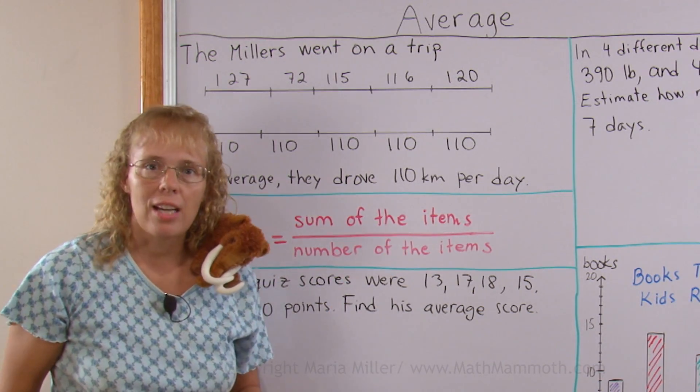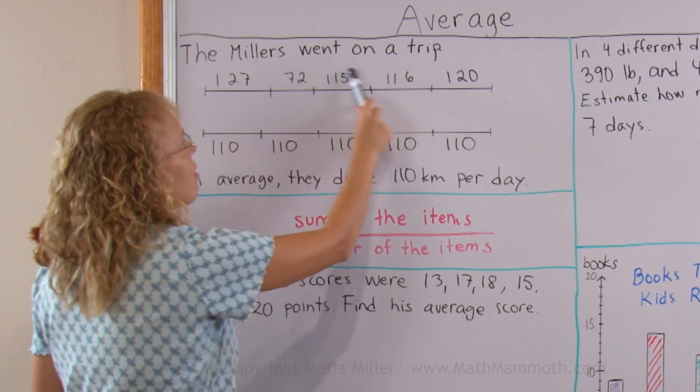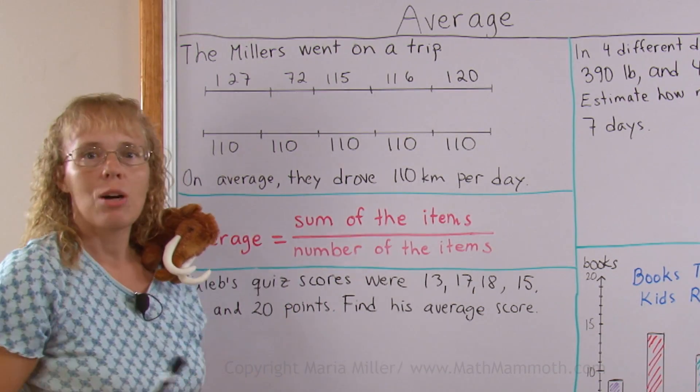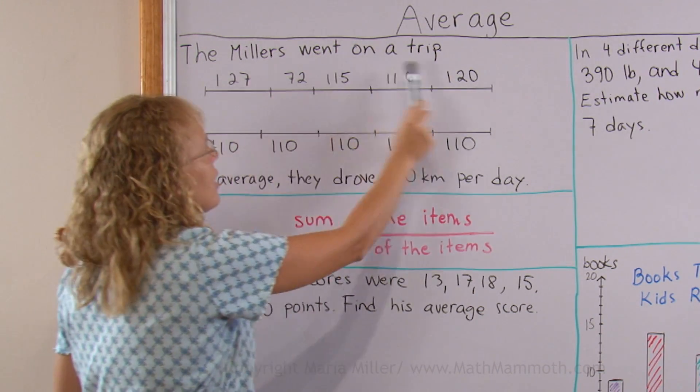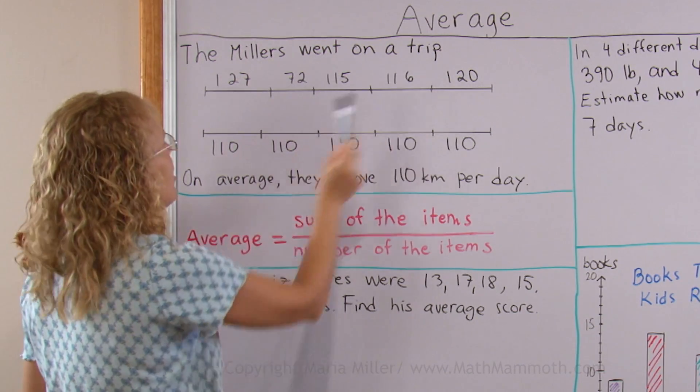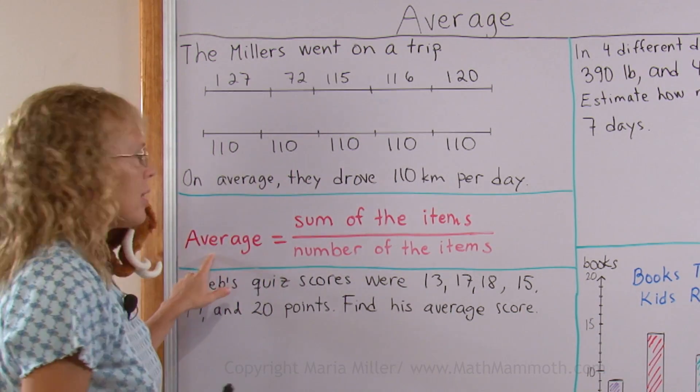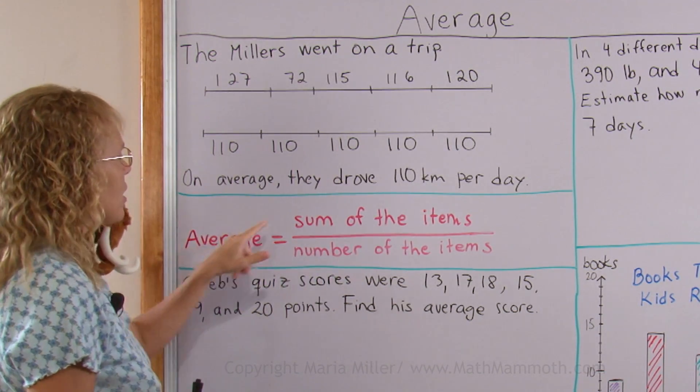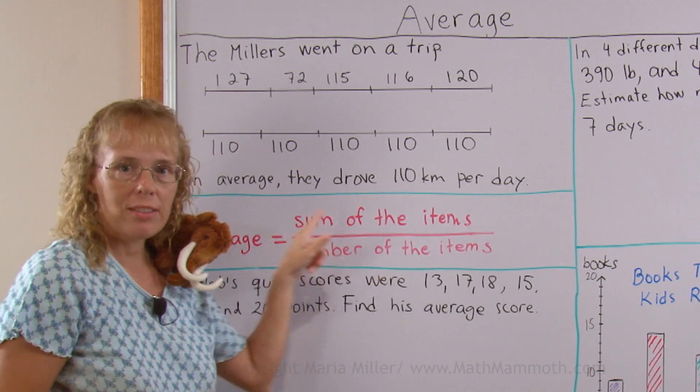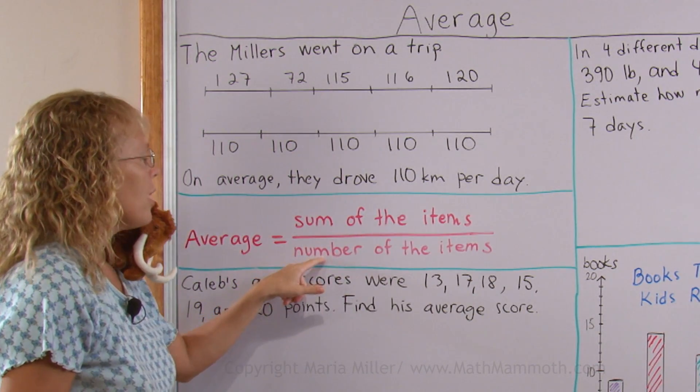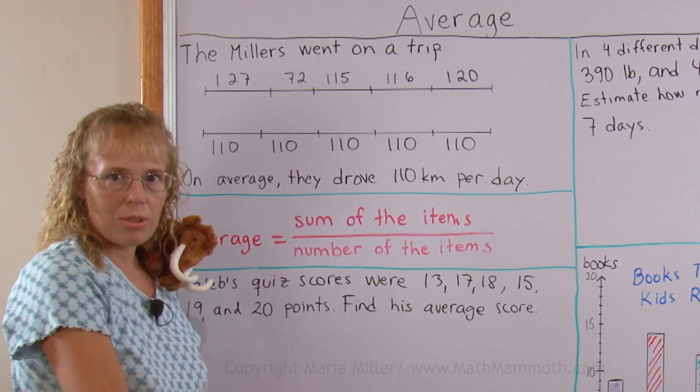And to calculate the average all we do is we add all these numbers and divide by how many there are. So I would add these and get 550 and divide by 5 to get 110. This is the formula here for it. Average is the sum of all the numbers you have, the items, and then divide by however many there are, the number of the items.